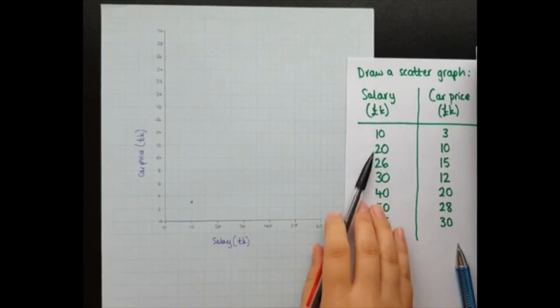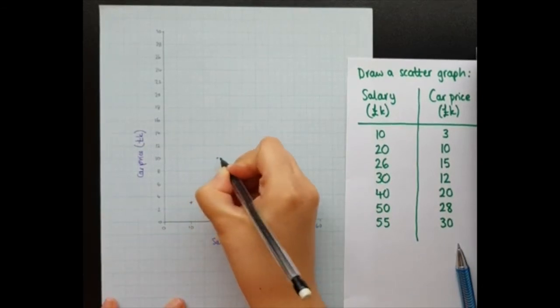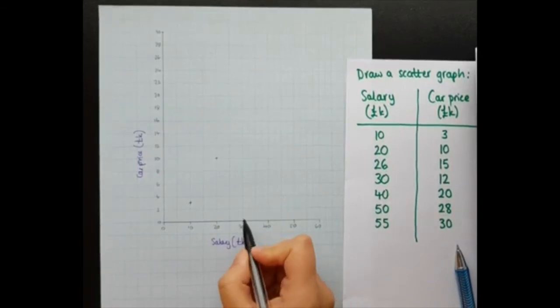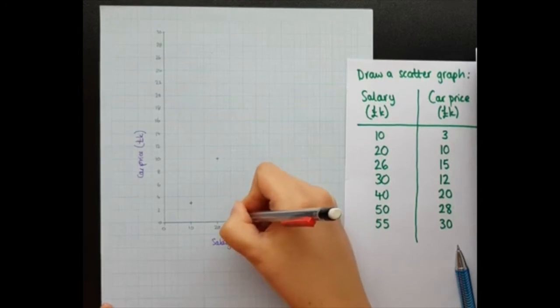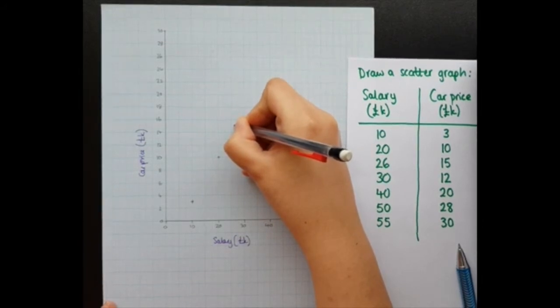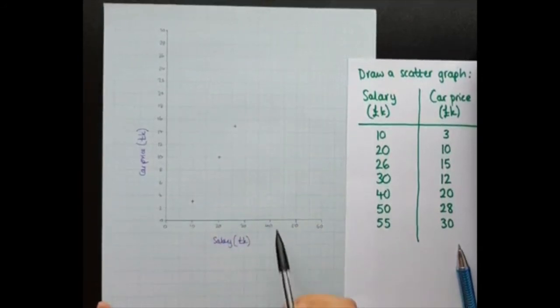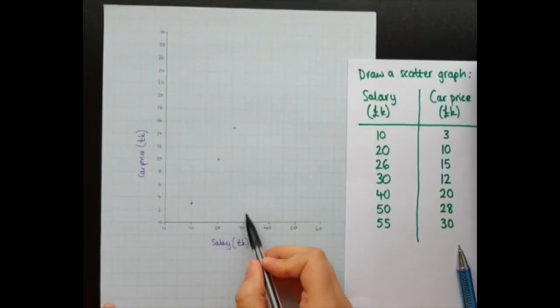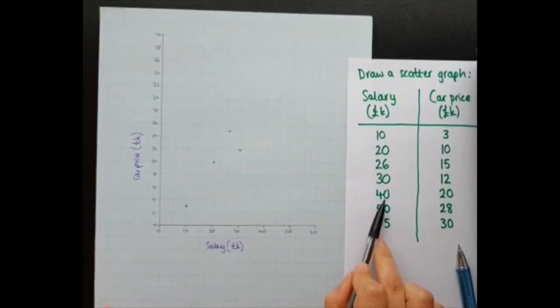My next one at 20k for salary, the car costs 10. At 26, the car costs 15. So 26 is there. The car costs 15. At 30, the car costs 12.